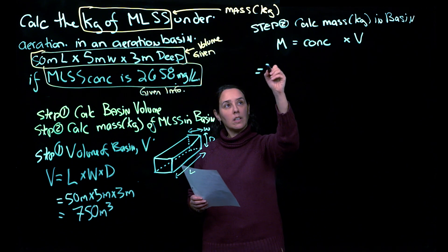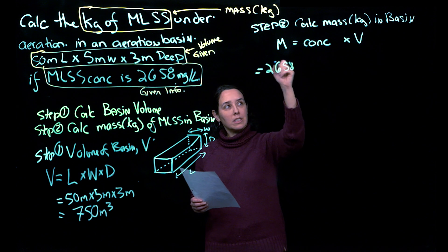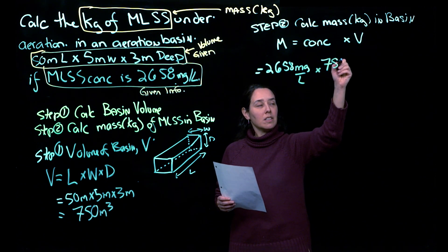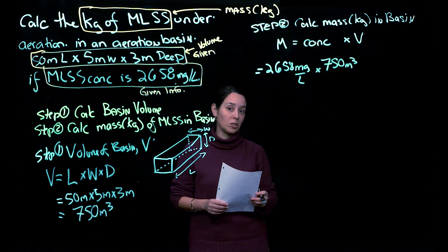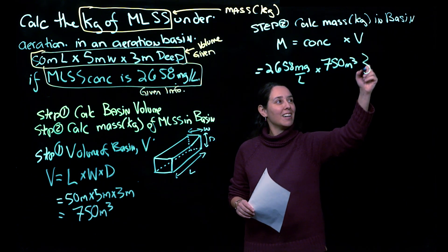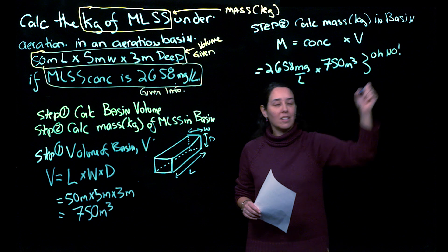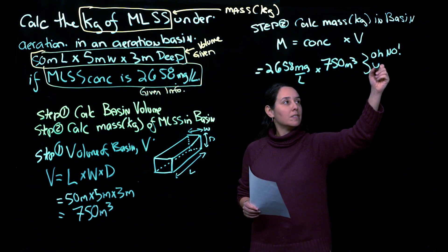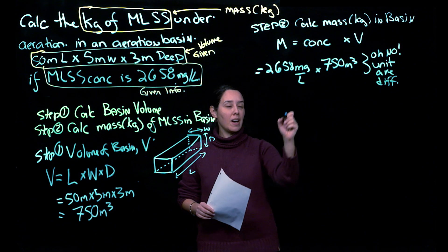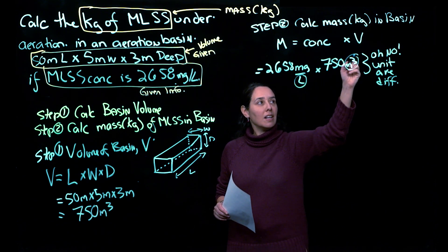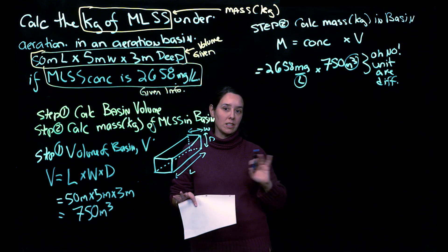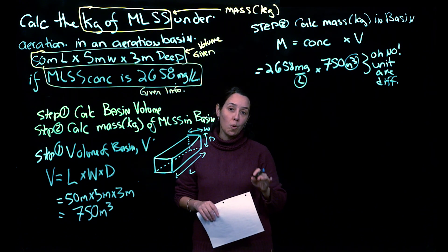So this is equal to 2,658 milligrams per liter times 750 meters cubed. So now just always write out the units because you should be like, oh no, the units don't match. Units are different. And what I mean by that is that here this is in liters and here that's in meters cubed. And in order to multiply those together, we have to make sure that it's in the same units. Otherwise we have what's called units inconsistency and you won't get the right answer.